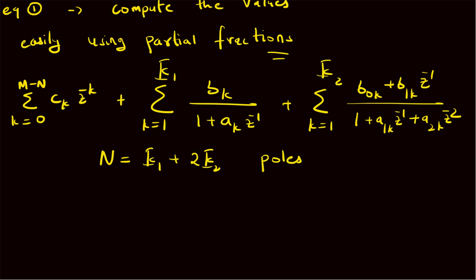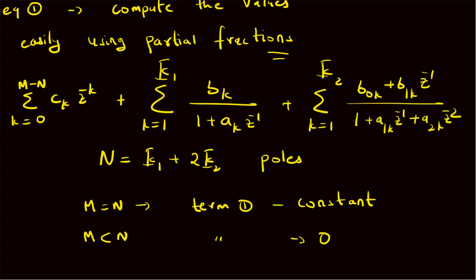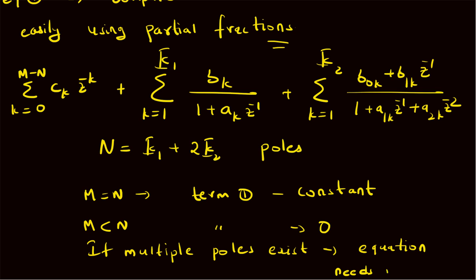When M equals N, the first term becomes simply a constant. When M is less than N, the first term is zero and vanishes entirely. If multiple poles exist — that is, a repeated pole at the same point — then the equation needs to be modified accordingly to account for those repeated poles in the partial fraction expansion.